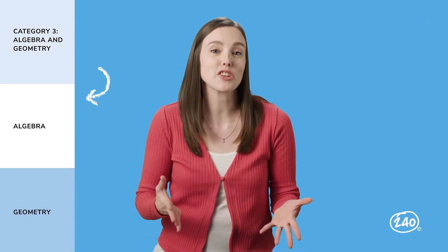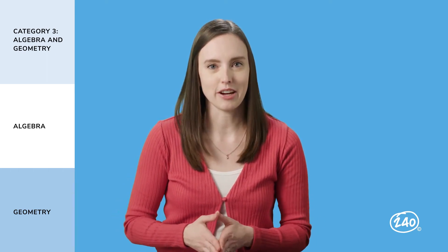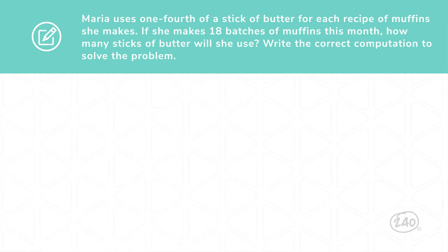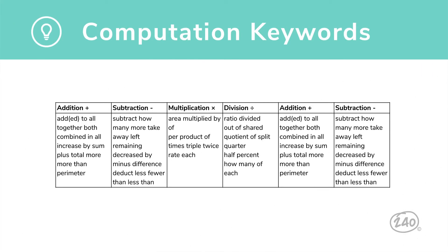Let's get started with Algebra. Sometimes you'll get a scenario and you'll need to come up with an expression or equation that represents that scenario. For example: Maria uses one-fourth of a stick of butter for each recipe of muffins she makes. If she makes 18 batches of muffins this month, how many sticks of butter will she use? Write the correct computation to solve the problem. You need to pick out key words and phrases that help you build this computation. We match up each part of the explanation with part of a mathematical sentence. We get the answer: one-fourth times 18 equals the number of sticks of butter Maria needs. One of the things that will really help you with this section is knowing what keywords to look out for and what they mean. This is just a small sampling of words you could see in your test questions. We've got a lot more of those for you to check out in our study guide.